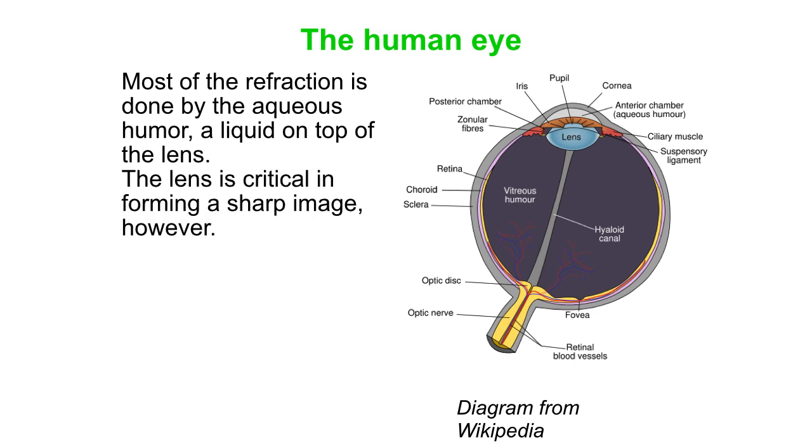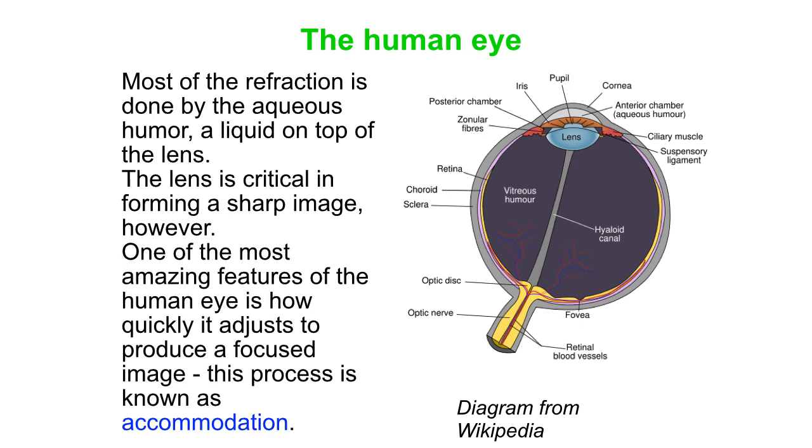However, the lens is absolutely critical in doing that last stage of focusing which is really important for getting that sharp image. And one of the most amazing features of the eye is just how well it works.